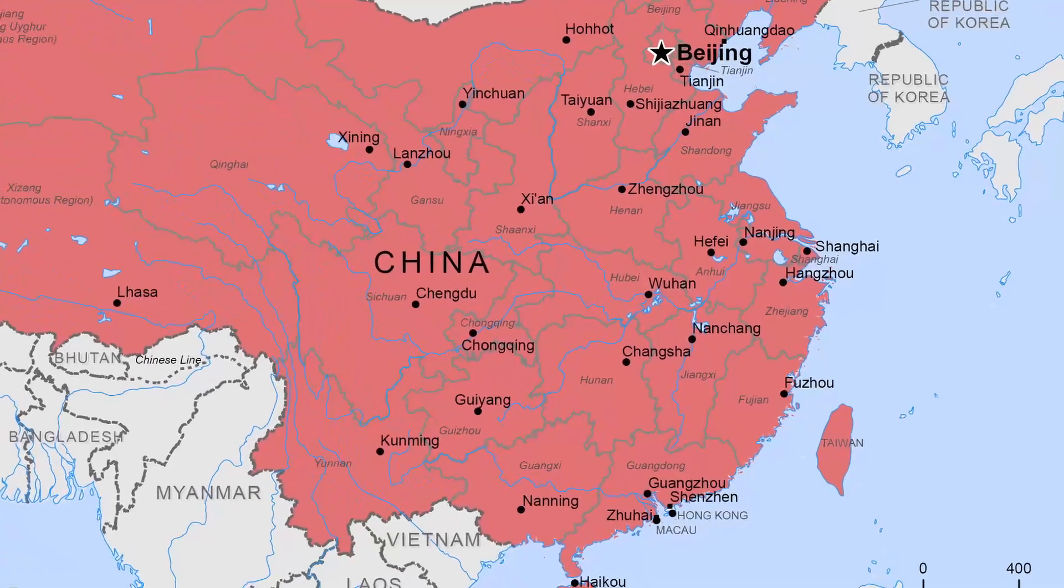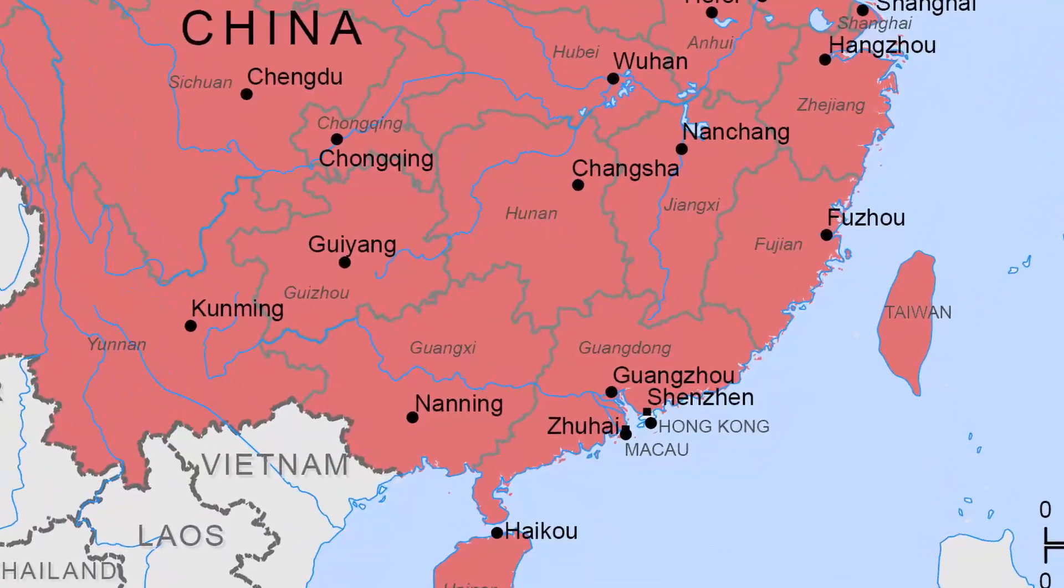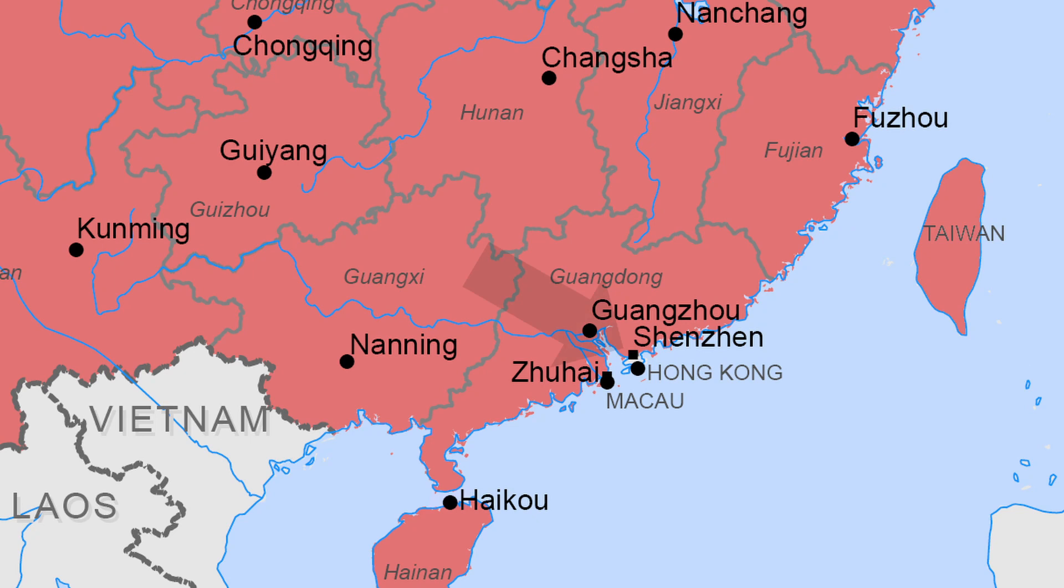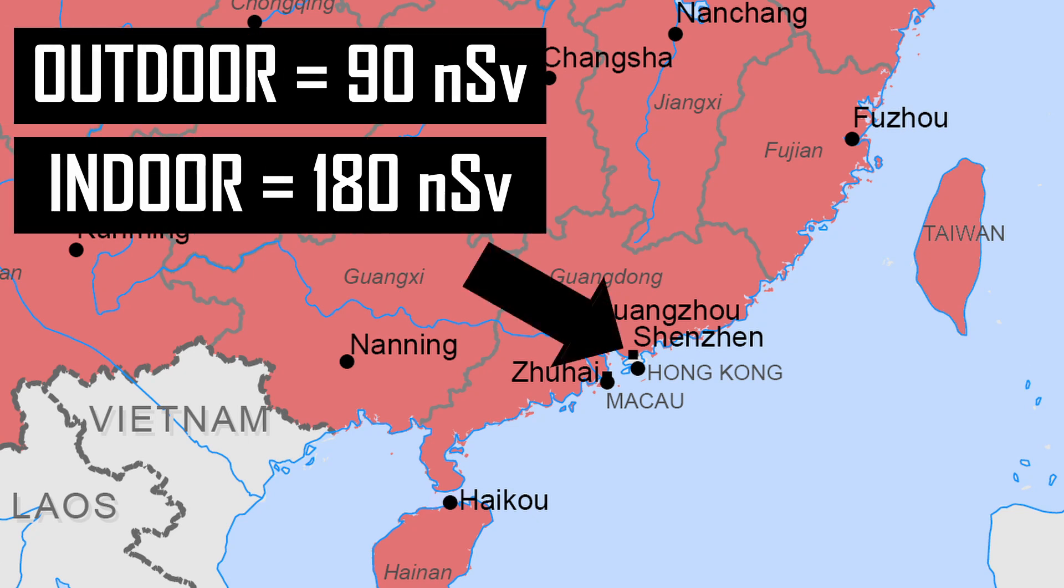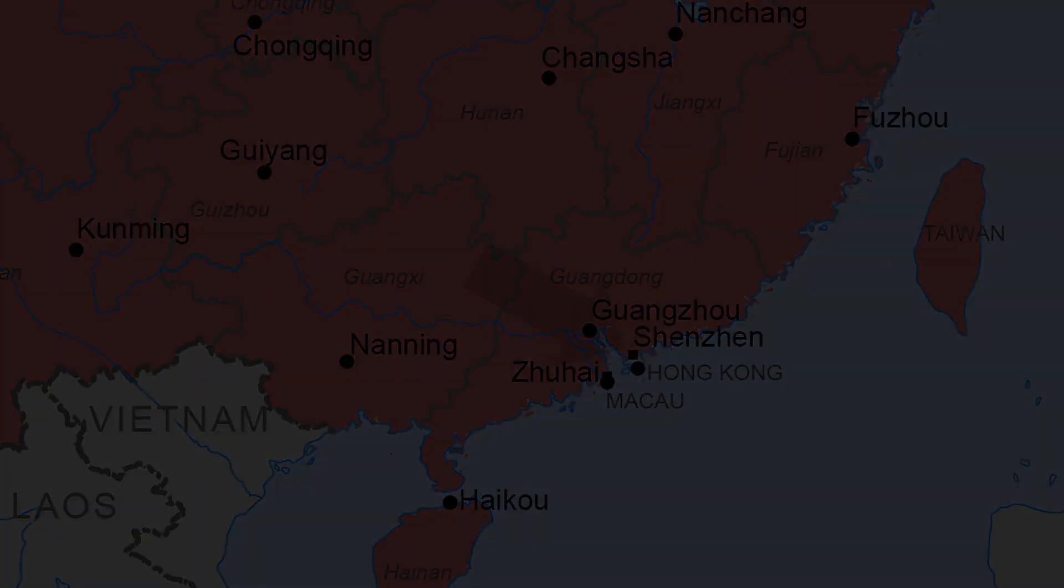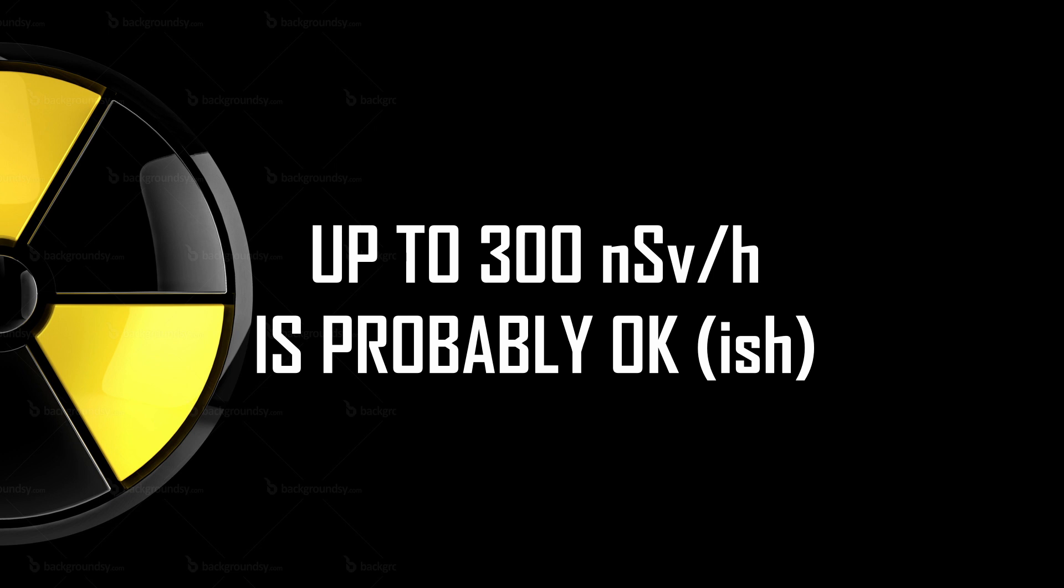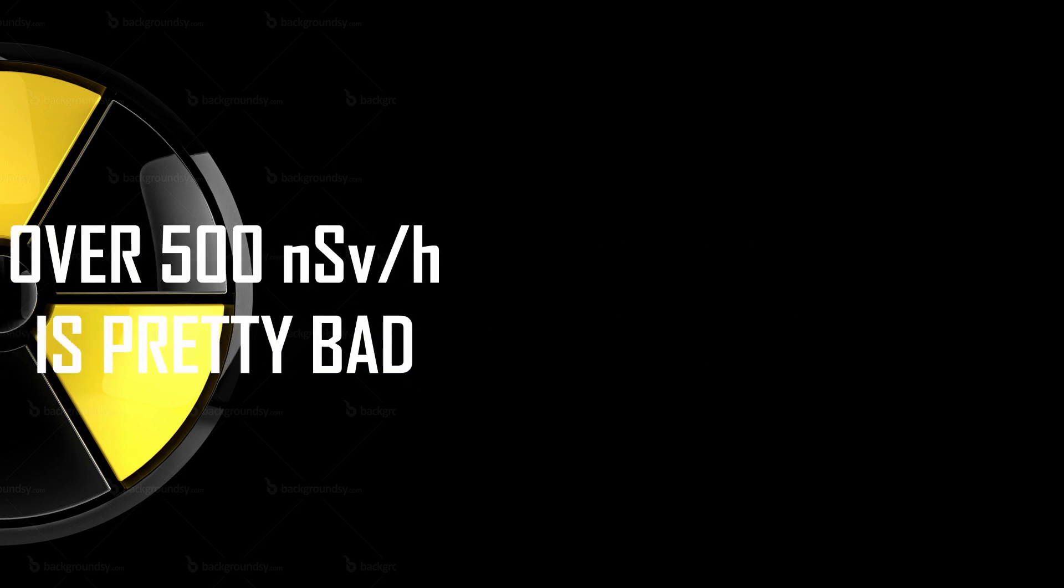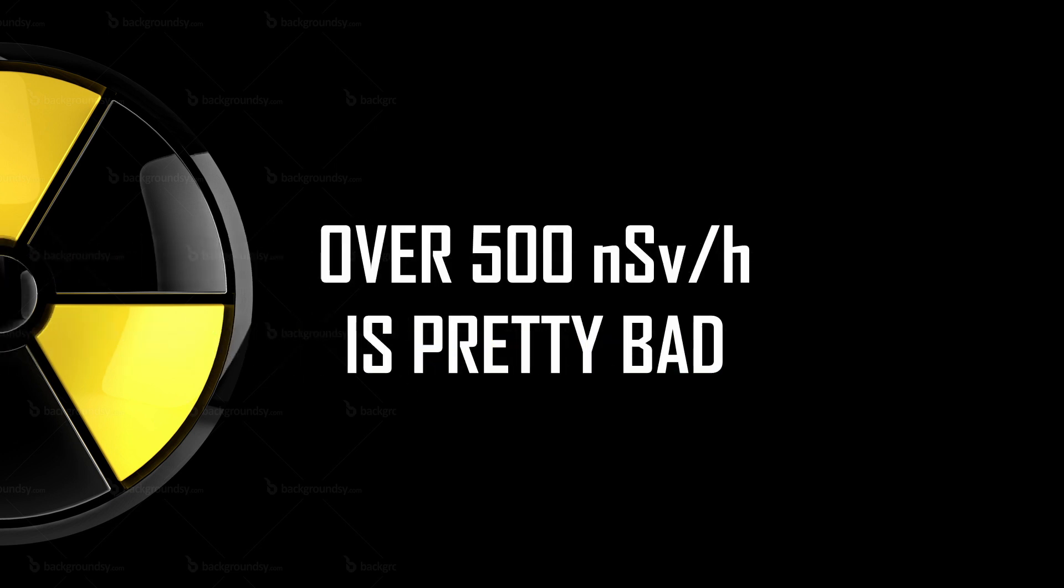As an example, where I live in Shenzhen, China, the outdoor levels are about 90 nSv per hour and up to double that within our apartment building. Don't worry if all the levels are higher than where I live. Levels up to 300 nSv per hour are not abnormal. If you are getting readings that are consistently above 500 nSv per hour, then consider moving house. Also, if you find a hot spot in your home that is over 1 µSv per hour, then you should investigate further.